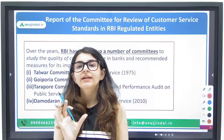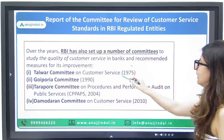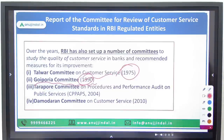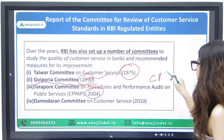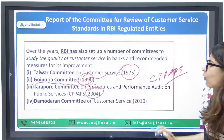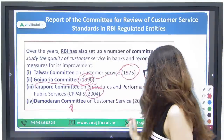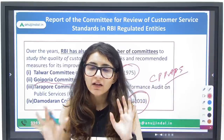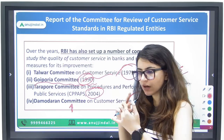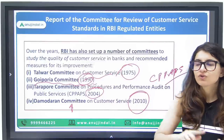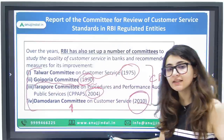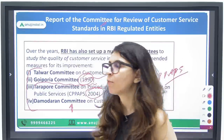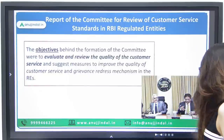Earlier committees on customer service include: the Talwar Committee (1975), the Goiporia Committee (1990), the Tarapur Committee on Procedures and Performance Audit on Public Services (2004), and the Damodaran Committee (2010). These names and years are important to remember for your exam.